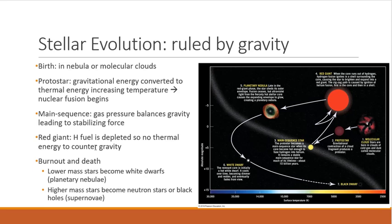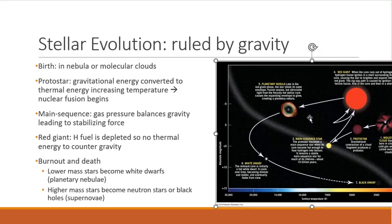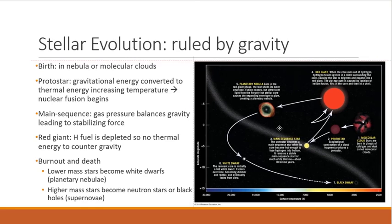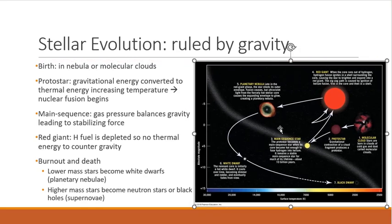Red giants, we have the hydrogen fuel is depleted, so we no longer have any thermal energy to counter gravity. And then, eventually, we go from the red giants that we have burnout and death. So lower-mass stars will become white dwarfs. That happens in planetary nebulae. Higher-mass stars become neutron stars or black holes, which are the supernovae, where we get the very high-mass elements are forming in those. And those require a lot of energy, and they have a lot of gravitational pull.